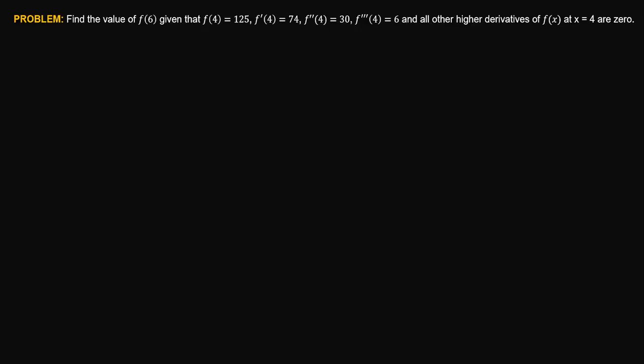Problem. Find the value of f of 6 given that f of 4 is equal to 125, f prime of 4 or the first derivative at x equal to 4 is equal to 74, f double prime of 4 or the second derivative is equal to 30, the third derivative is equal to 6, and all other higher derivatives of f of x at the point x equal to 4 are 0.